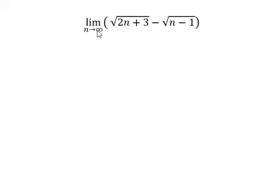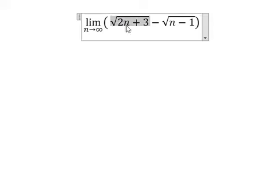When n approaches positive infinity, this expression will go to positive infinity, so the square root will go to positive infinity. Similarly for the second term — when n goes to positive infinity, the square root will also go to positive infinity.